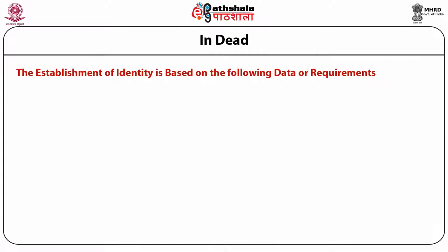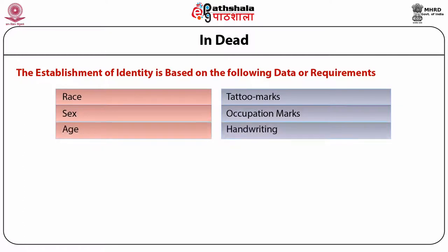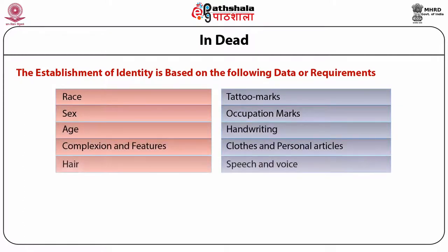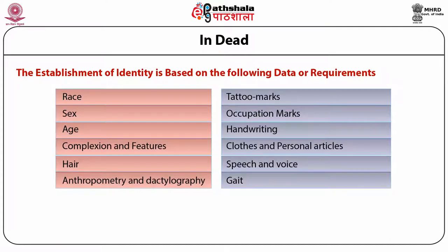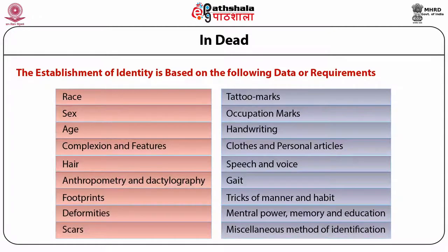Establishment of identity is based on a number of data requirements which include race, sex, age, complexion and features, hair, anthropometry and dactylography, footprints, deformities, scars, tattoo marks, occupational marks, handwriting, clothes and personal articles, speech and voice, gait, tricks of manners and habit, mental power, memory and education, and miscellaneous methods of identification.